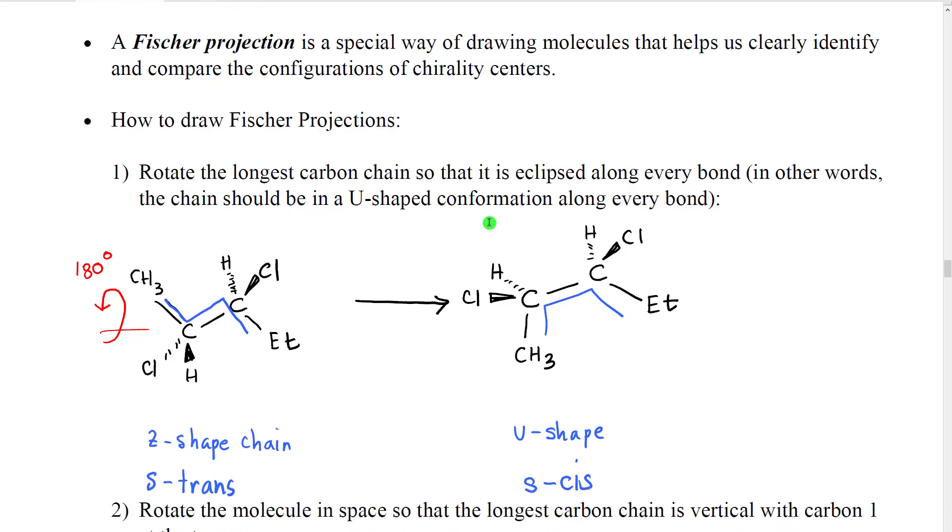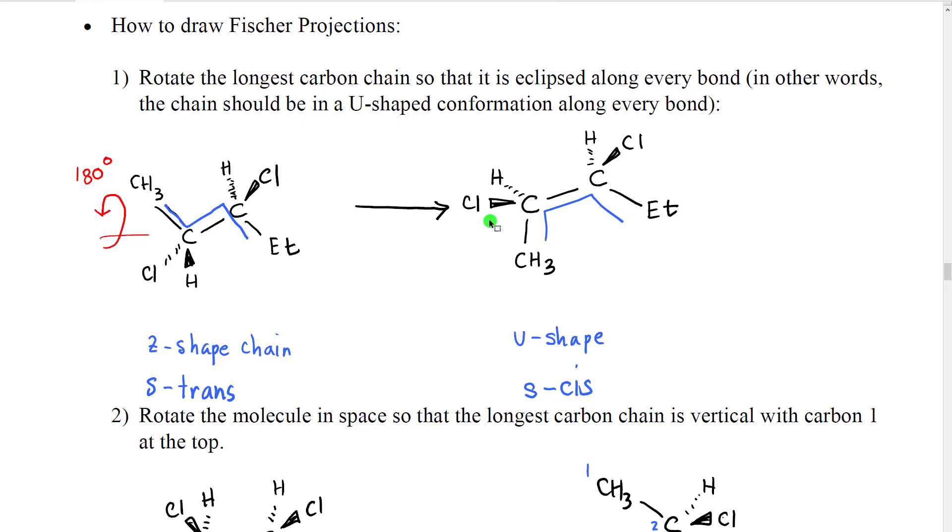I've laid out our discussion of how to draw Fischer projections in steps to show the steps that you would take when starting with a perspective drawing like this where we have dashes and wedges and converting it into a Fischer projection. What I've then done is taken an example molecule like this one and I've illustrated how each step works to convert this structure ultimately into the Fischer projection.